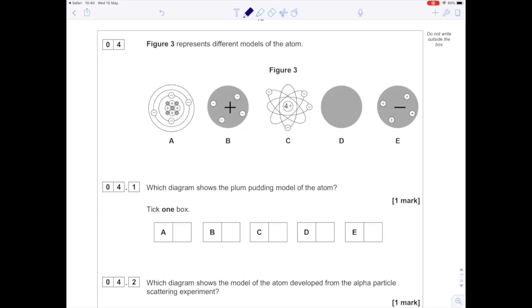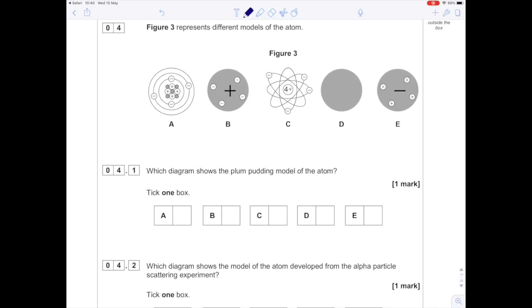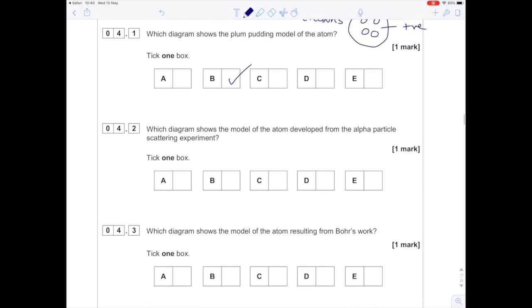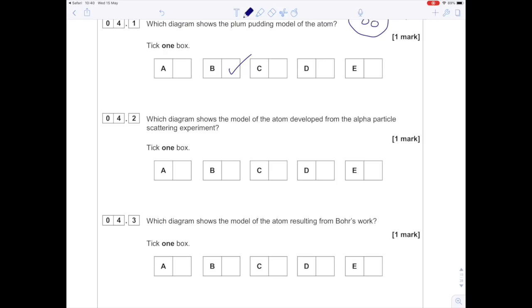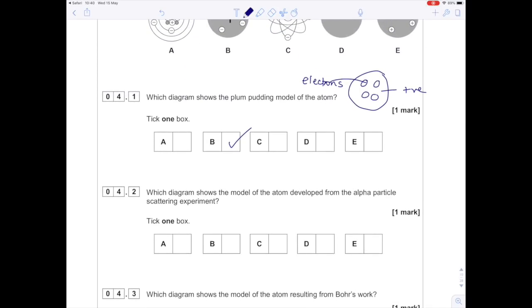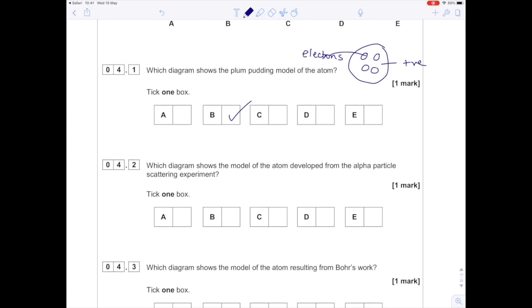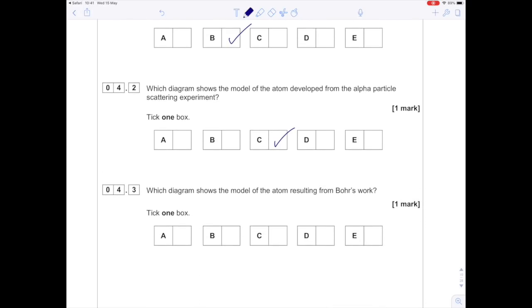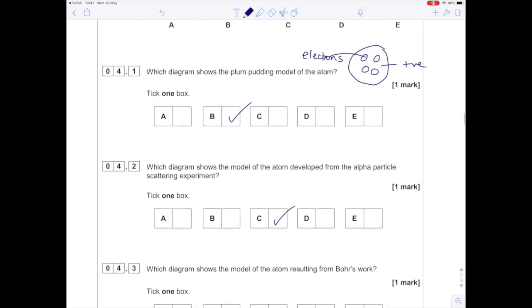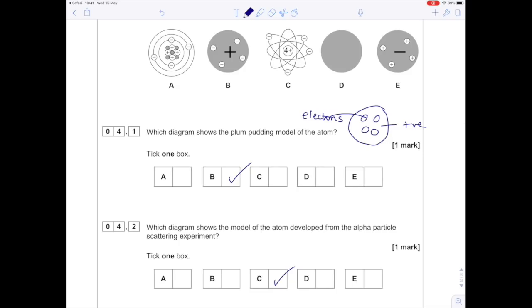Figure 3 represents different models of the atom. Which diagram shows the plum pudding model? Thompson's plum pudding looks like a spherical cookie made of positive charge with electrons as plums - that's B. Which shows the model from the alpha particle scattering experiment? Rutherford proved the existence of a very small nucleus surrounded by shells of electrons - that's C. Which shows Bohr's model? Bohr showed electrons were in shells at equal distances from the nucleus - that's A.